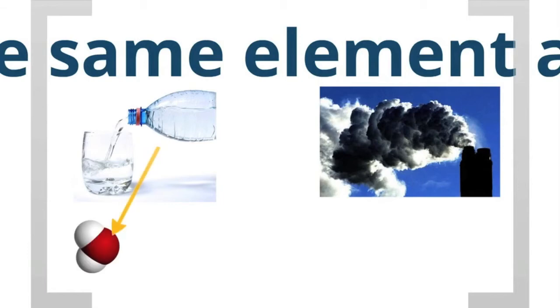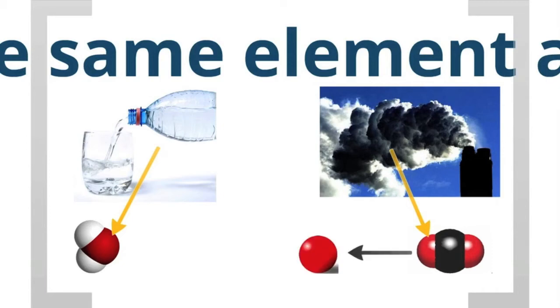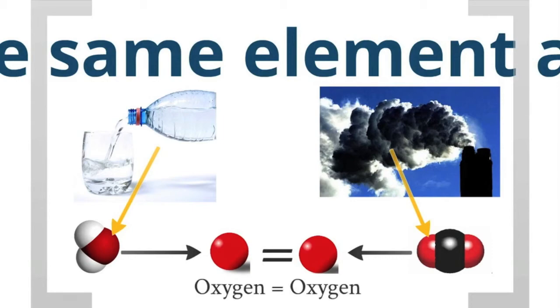Here we have water and carbon dioxide. Carbon dioxide contains oxygen atoms, which is the red atom. Water also contains an oxygen atom. And these two oxygen atoms, even though they are inside different elements, they're identical. They're the same. An oxygen atom is an oxygen atom, no matter in which compound you find it. Oxygen is oxygen.